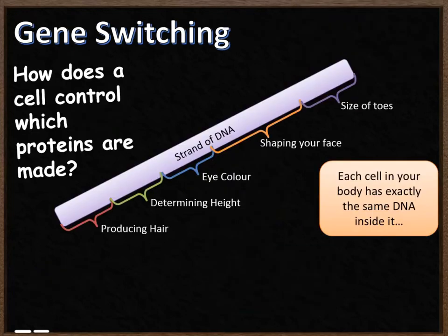So what is this process of gene switching and how does it control what the cell does? The information stored inside your DNA is very useful for creating proteins, and different proteins are required for different parts of your body. It's important to note that each cell inside your body has exactly the same DNA code inside it. However, different cells do different jobs and you don't need all of the proteins your DNA is able to make in each cell.